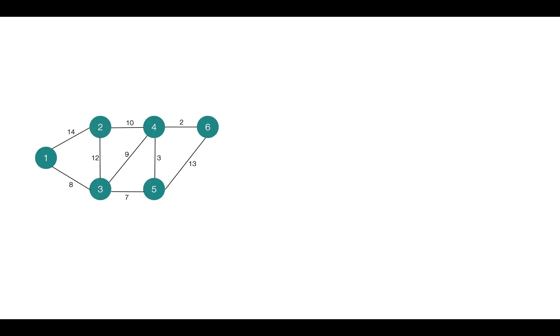So one of the spanning trees of this graph can be this one. So all the vertices are connected and there are no cycles, and as it's a connected and acyclic graph, we call it a tree.